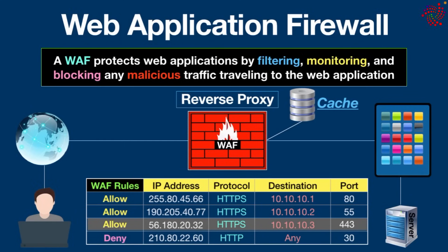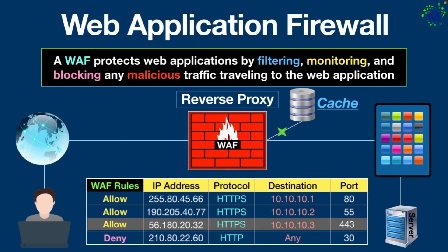Reverse proxies, which sit between clients and backend servers, can also be used to cache responses from backend servers. This can improve web application performance by reducing response time for frequently accessed resources and easing the load on backend servers. Cached responses can be served more quickly than dynamically generated responses from backend servers.